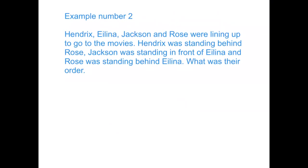Here's example number two. We have a question that says: Hendrix, Alina, Jackson, and Rose were lining up to go to the movies. Hendrix was standing behind Rose. Jackson was standing in front of Alina. And Rose was standing behind Alina. What was their order? Once again, when you read this, you get quite confused because you can't picture in your head what they're asking you to do — there's too much information to think through in your head. So the best thing to do is to draw it down.